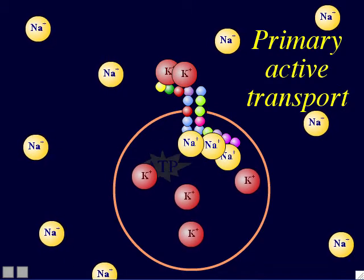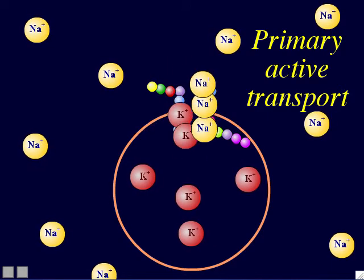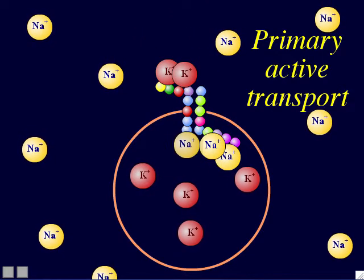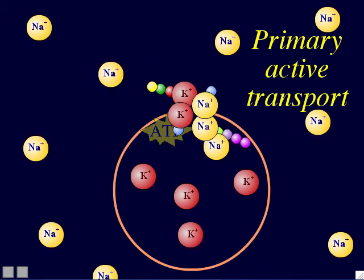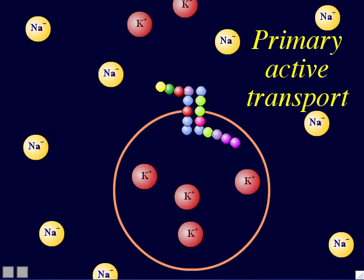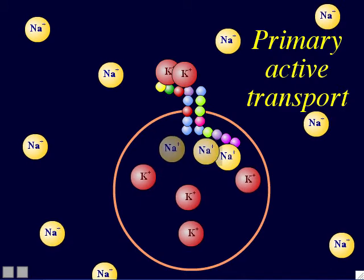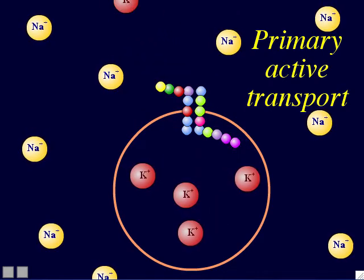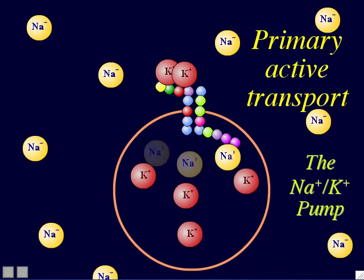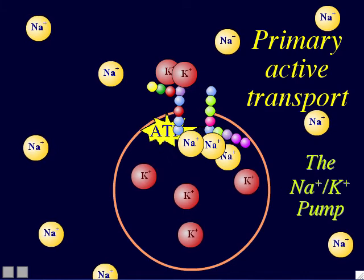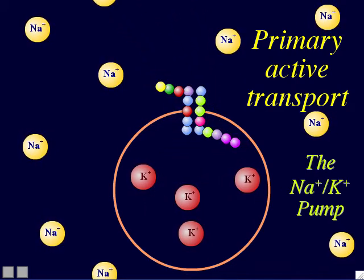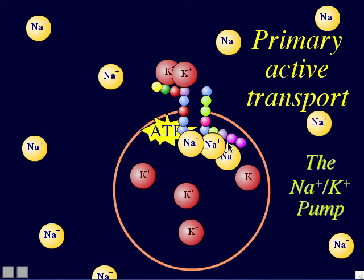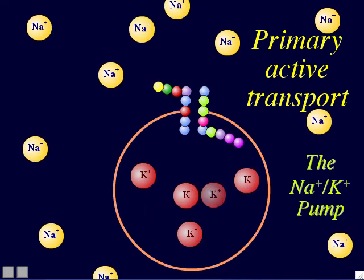This particular protein that simultaneously pumps potassium ions and sodium ions is a famous protein called the sodium-potassium pump. It's a channel protein that moves sodium ions and potassium ions simultaneously against their concentration gradients using ATP as its energy source. The sodium-potassium pump comes up several times in physiology — we'll encounter it in several different chapters during Biology 6.